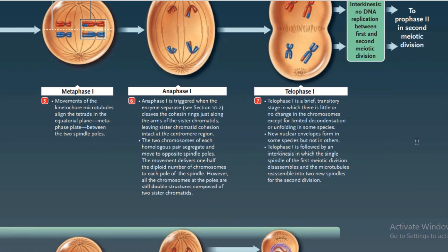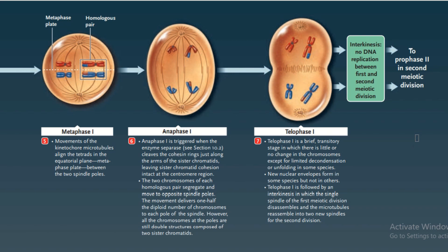In Metaphase I, movement of kinetochore microtubules aligns the tetrads at the metaphase plate between the two spindle poles. In Anaphase I, an enzyme cleaves the cohesion rings along the arms of the sister chromatids, leaving sister chromatid cohesion intact at the centromere region. The two chromosomes of each homologous pair segregate and move to opposite spindle poles, delivering half the diploid number of chromosomes to each pole. However, all chromosomes at the poles are still double structures composed of two sister chromatids.